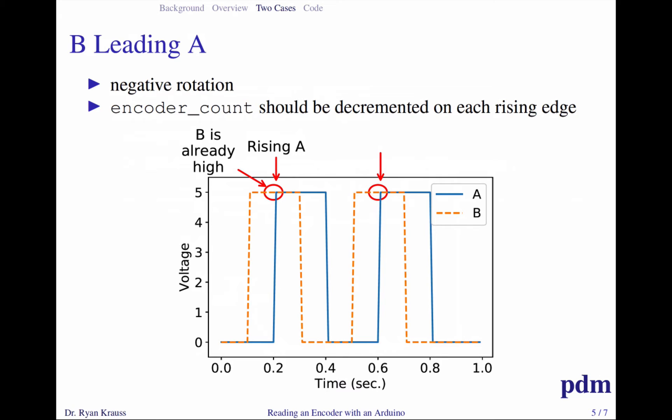In the opposite scenario, going the opposite direction, we now have still the same blue line as A, this dashed orange line is B, but now when the rising A edge happens, B is already high, which means B went before A. So B is leading A. These would be two negative clicks of my encoder, and so on both of these vertical red arrows, the rising A edges, I would decrement my encoder count in my ISR.